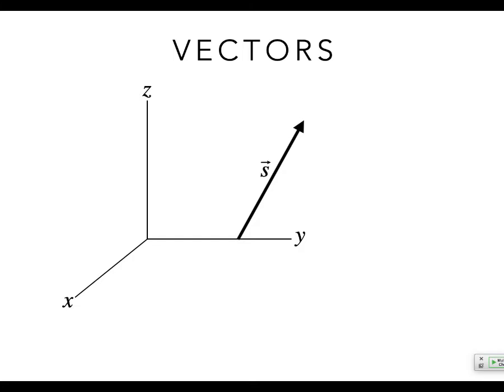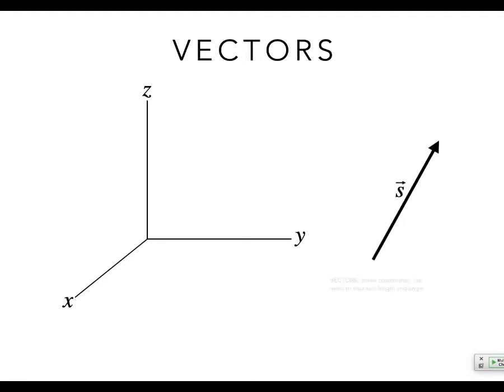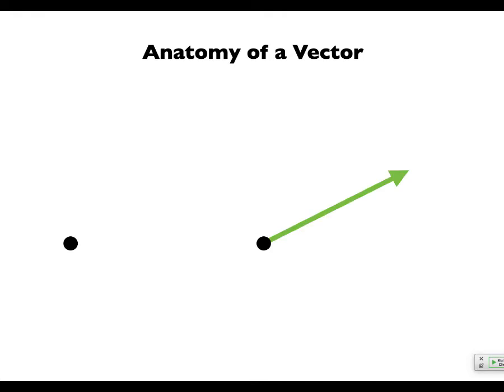A vector really just describes a length and a direction, so you can move it all over in space — it doesn't actually matter. They only need to maintain this angle. So if you have a reference line, it's always going to have the same angle and the same length. A vector really is a magnitude and a direction. It looks like it's existing in space, but really it's just telling you the magnitude and direction at one point. This arrow is just a visual cue — it's just a way of keeping track of a number and a direction.